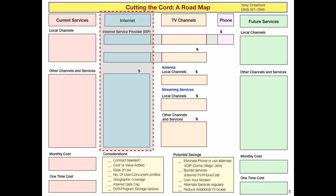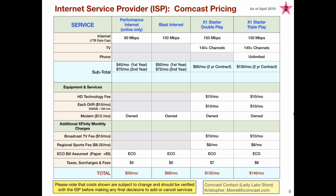Let's go now to the second block — the internet. We're going to talk about what kind of service you need, what kind of speed. The internet provider usually can also provide your TV channels and your phone, so we have to talk about these in concert. How many of you have Comcast? Almost half. How many have Spectrum? Not quite as many. How many have CenturyLink? Quite a lot.